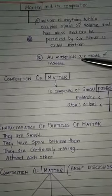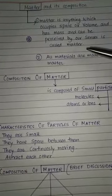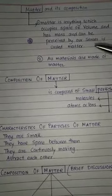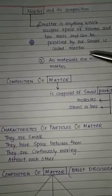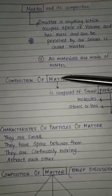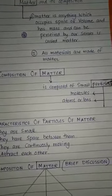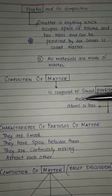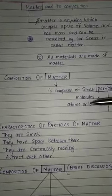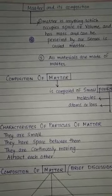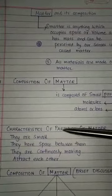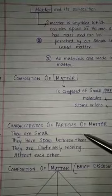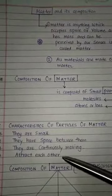Now whenever we talk about matter, a question can come to our mind: what is matter made up of, or what is matter composed of? Matter is composed of small particles. What are these particles? Molecules, atoms, or ions. What are the characteristics of particles? They are small, they have space between them, they are continuously moving, and they attract each other.